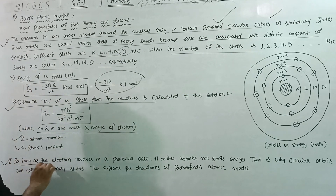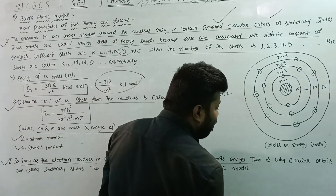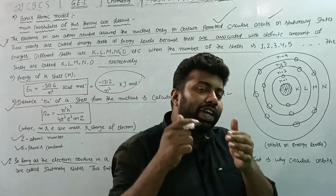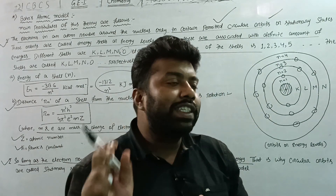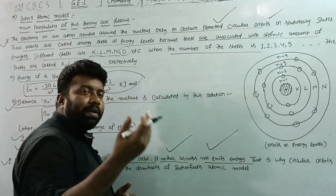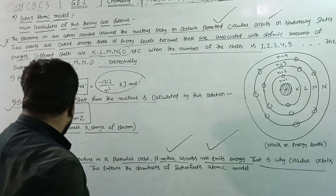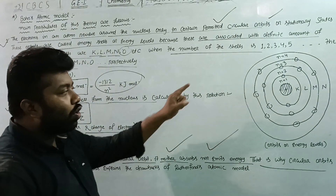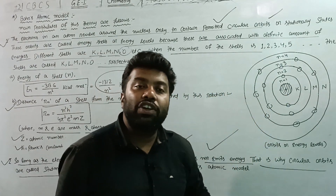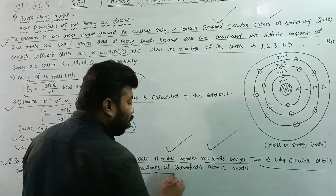This is the first postulate. The second postulate states that as long as the electron revolves in a particular orbit — whether K shell, L shell, M shell, or N shell — it neither absorbs nor emits energy. This is why these circular orbits are called stationary shells.